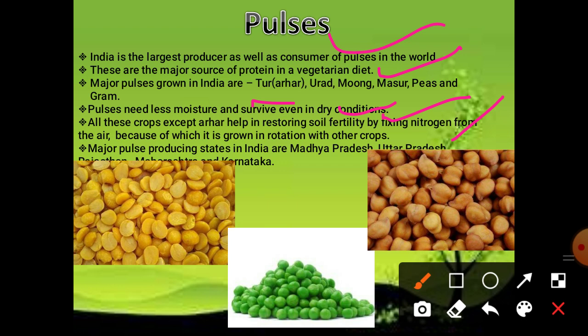Major pulse-producing states in India are Madhya Pradesh, Uttar Pradesh, Karnataka and Rajasthan. These are the important states for the production of pulses in India.